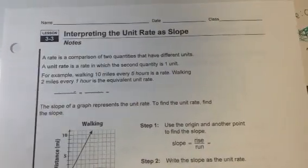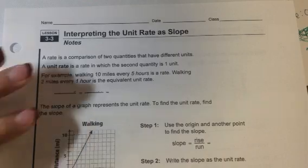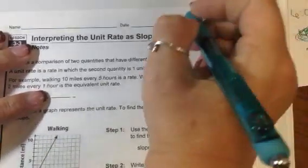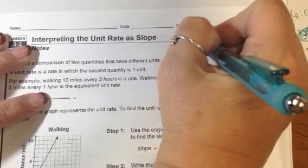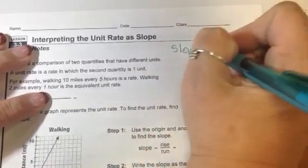Okay, so let's look at interpreting the unit rate as slope. We've already talked about slope, and we know that when we're looking at slope, we're looking at rise over run.